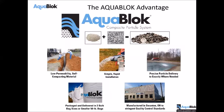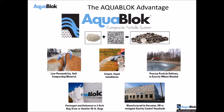What's the AquaBlock advantage? It's a composite particle system — self-compacting — achieving a very low permeability: 10 to the minus 7, maybe even 10 to the minus 8 or minus 9 centimeters per second, without compaction. Very simple and easy to install, with precise particle delivery — not needing to dewater a pond to get AquaBlock in to seal a leak. Very convenient packaging: two bulk bag sizes or smaller 50-pound bags. Manufactured entirely in the United States in Swanton, Ohio with a very stringent quality control program.